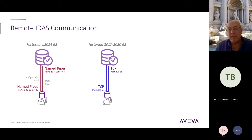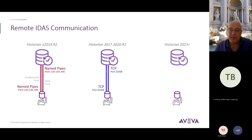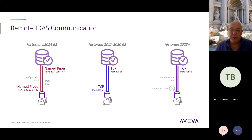IDASs used to use named pipes, then were converted to a TCP connection, but still required a bidirectional port setup where the Historian had to connect to the IDAS and the IDAS had to connect to the Historian. In 2023, you can now firewall this off and have no inbound ports to your IDAS.